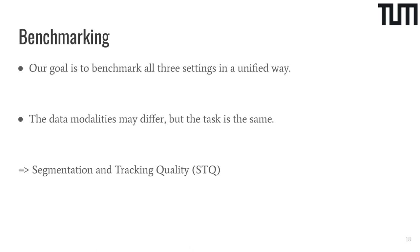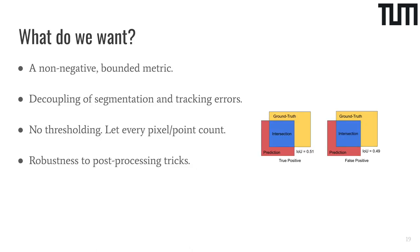Given these new annotations, our goal is to benchmark all three flavors of this task in a unified way. We argue that even though the data modalities are quite different, and traditionally the communities working on them were different as well, the task is still the same. In this workshop introduction, we want to give you a very high level idea of how we think this task should be evaluated. Here is a list of requirements we had for the metric. First, we want the metric to be non-negative and bounded, which has not always been the case for tracking metrics. Secondly, we think it's important that both segmentation and tracking are balanced, and their errors are decoupled within the metric.